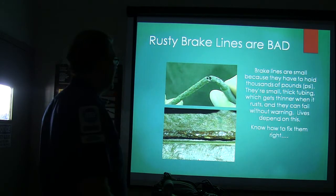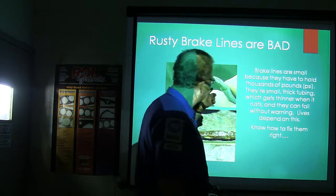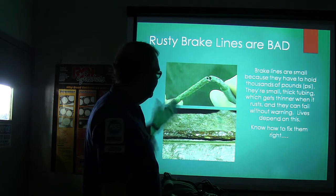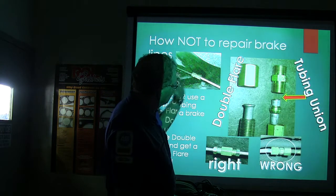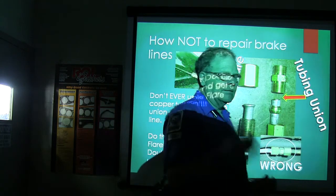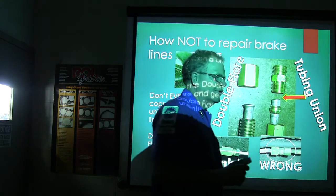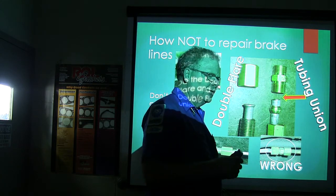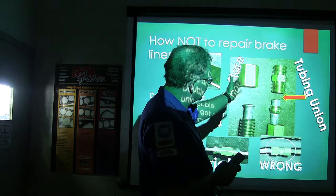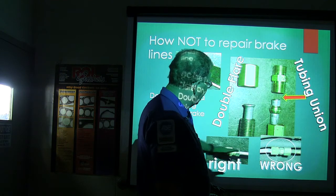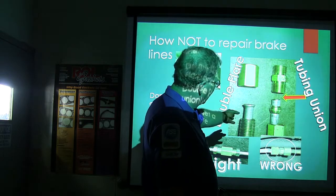Brake lines are small because they have to hold thousands of pounds of pressure — about 2,000 pounds when you're standing hard on the brakes. When they rust they get thinner and can fail without warning. Know how to fix them the right way: double flare, that's the right way. I've got some new nickel tubing out here that's easy to work with and won't rust. A tubing union is not the right way to fix brake lines — use a flare union with two flare nuts.